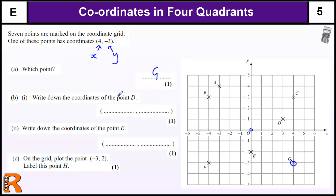Now down to Point D. We're going to have to go across to 3 and then up to 1, so the coordinates are (3, 1). It's very important that you get these the right way round. Although allowances are made for people who consistently get them wrong — putting y first and x second — you really should remember that the x coordinate comes first, because x comes before y in the alphabet. We always go across before we go up and down.